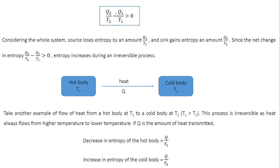What is the physical meaning of this equation? If you look at the entire system, the source is losing heat energy. In other words, the source loses entropy by an amount Q1 by T1. The sink is gaining heat energy, so it gains entropy by an amount Q2 by T2. The net change in entropy is the total gain Q2 by T2 minus the total loss Q1 by T1, and we know this is greater than zero. So the net change in entropy is positive — entropy increases during an irreversible process.